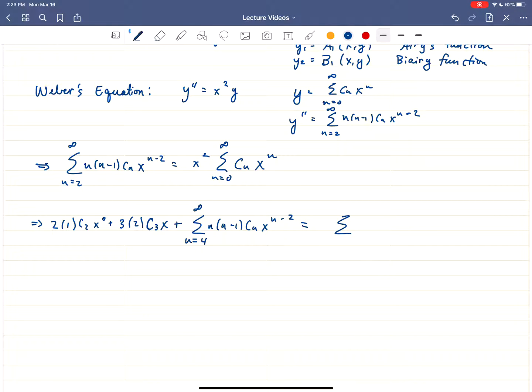And on the right side, let's just move the x squared in the sum. We're going to get the sum of c sub n, x to the n plus 2. And what we're going to do now is the sum on the left, we're going to shift the index by starting our sum at n equals 0. And let's see, we can simplify a little bit along the way. This is 2c₂ plus 6c₃x plus the sum.